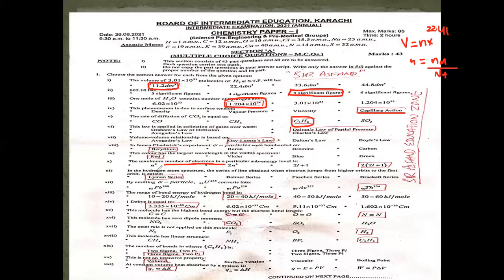MCQ 11 came from the Hydrogen Spectrum, which was not included in the reduced syllabus. We studied the topic of Hydrogen Spectrum, including all derivations of the hydrogen atom. When the electron transitions to the first energy level, we call it the Lyman series.